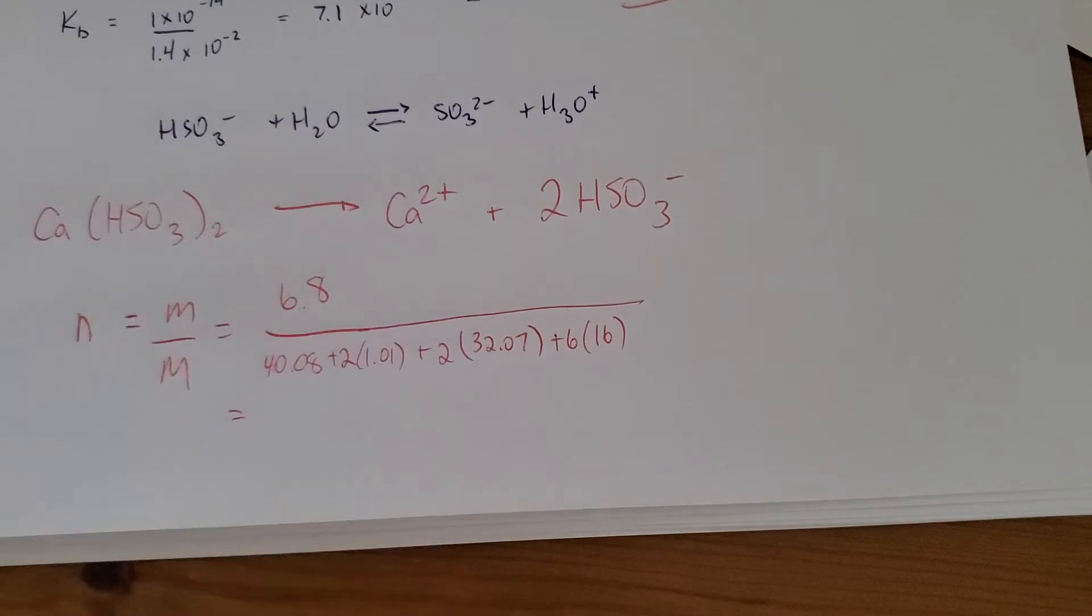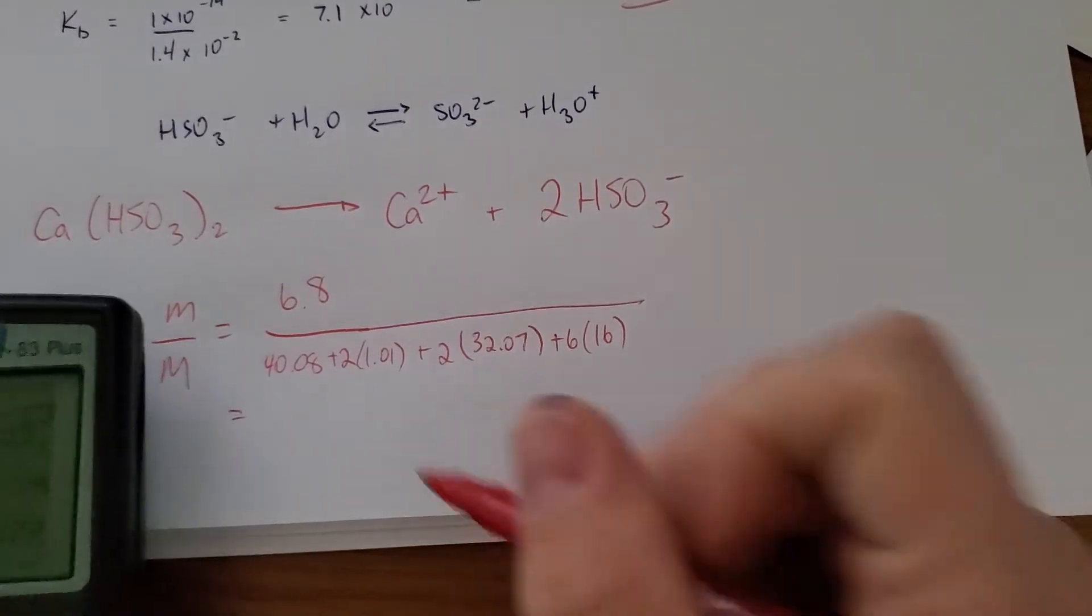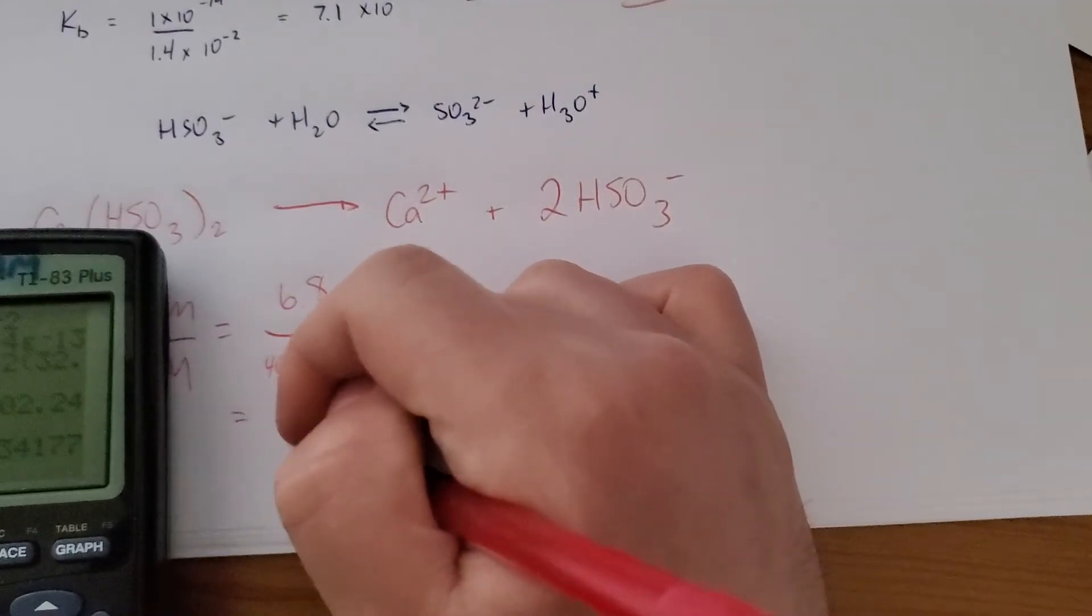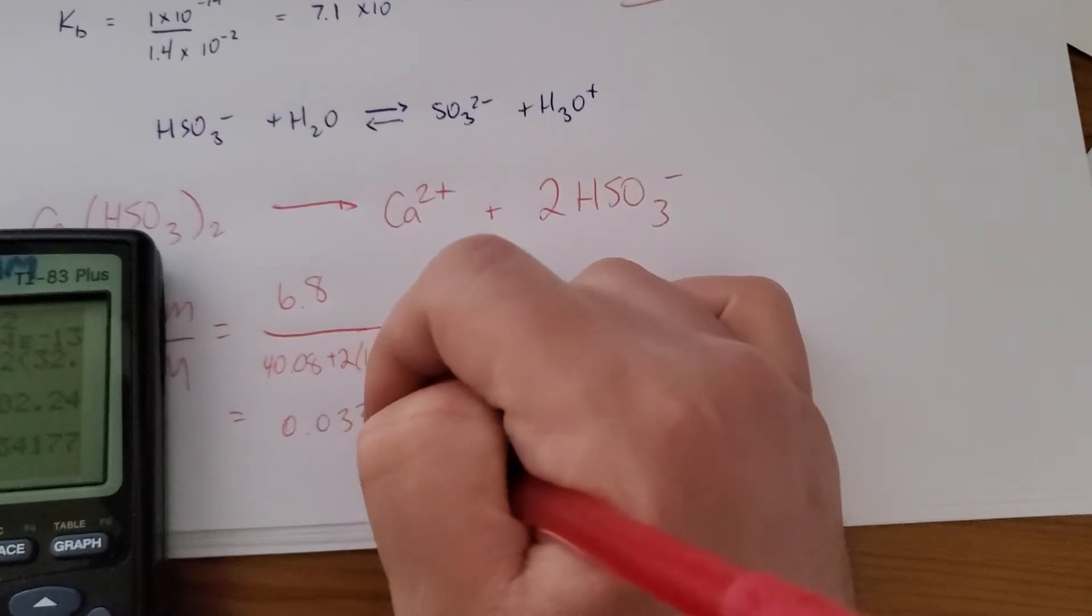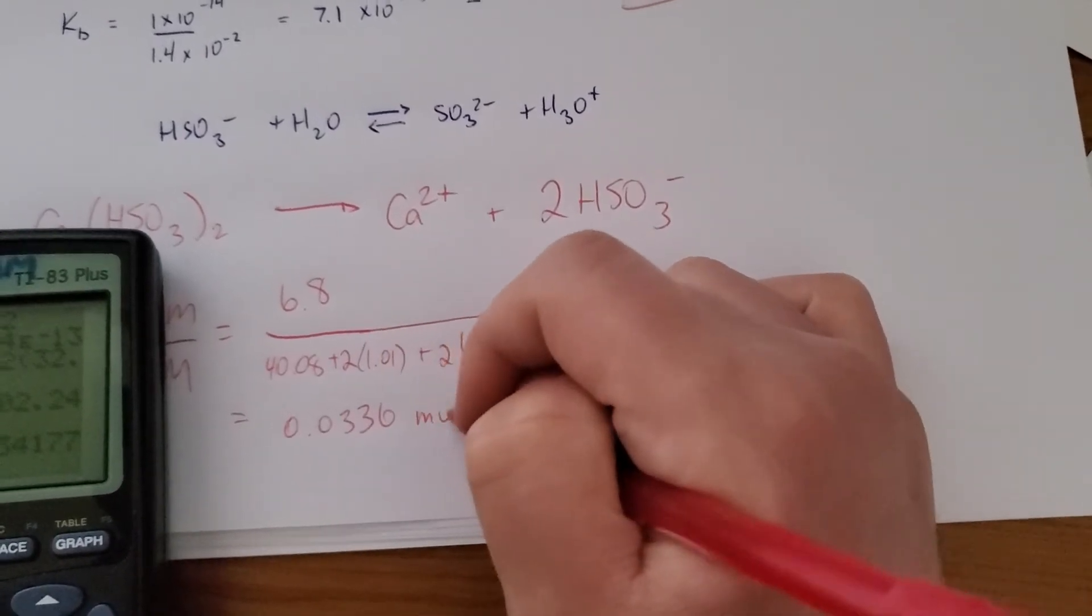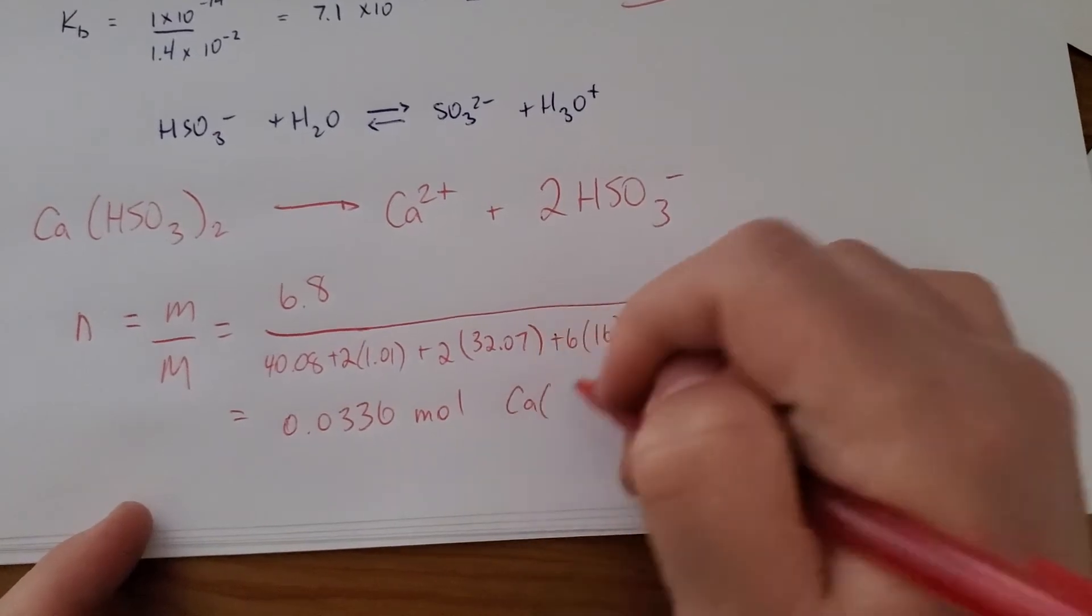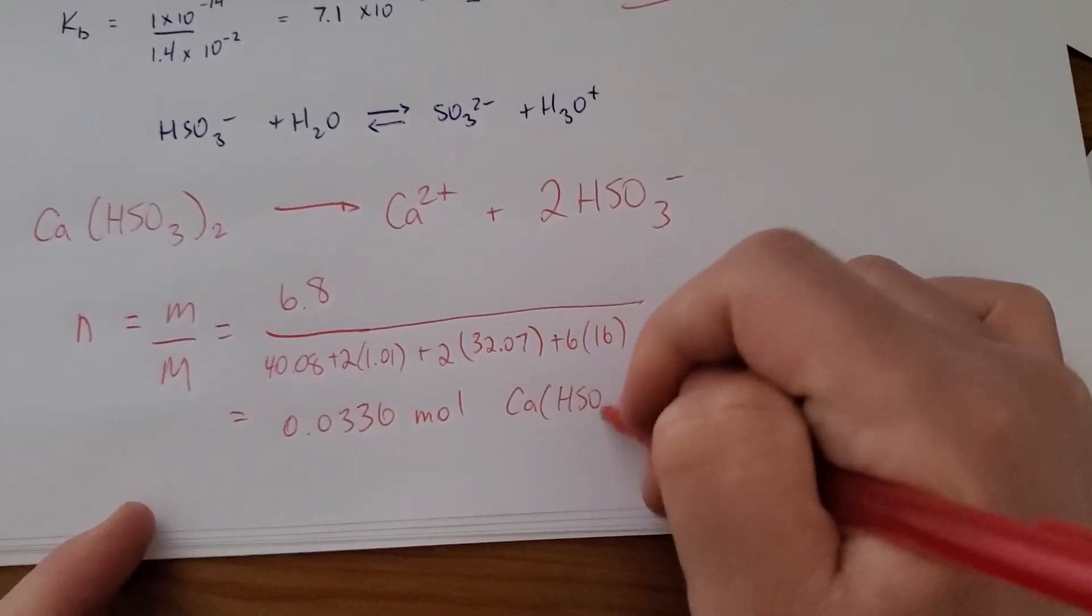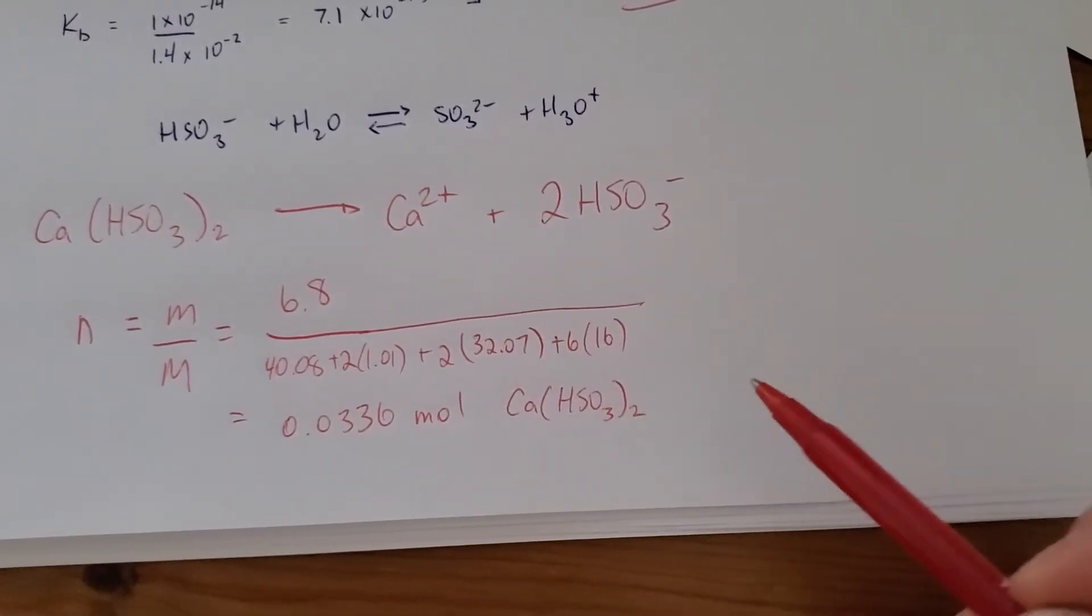So my division statement doesn't look so pretty, but it's going to get the job done. So my math, I got a value of 0.0336 moles. And this is of calcium hydrogen sulfite.